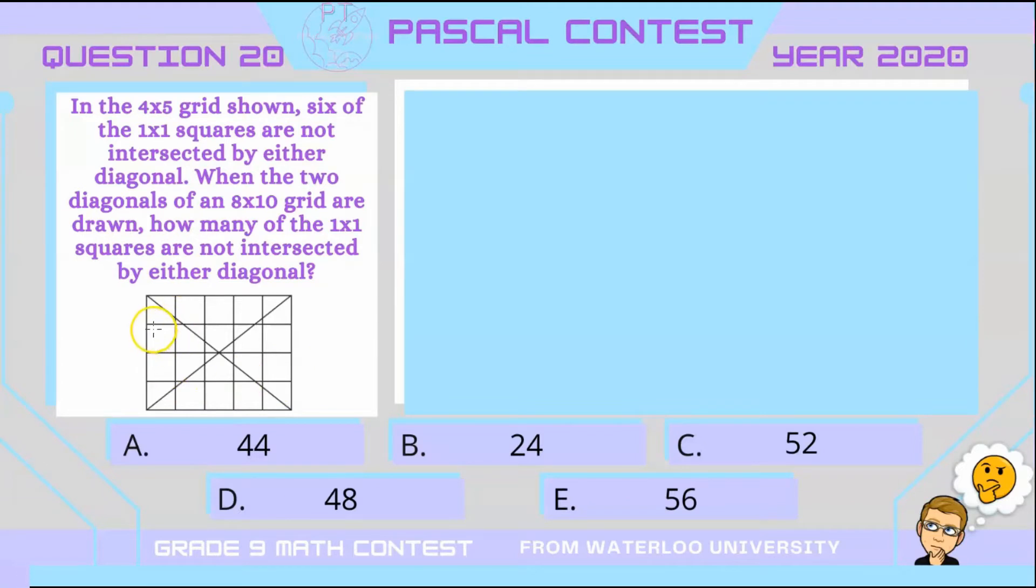All right, so in this case we can see that we have a total of 6 individual 1x1 squares which are not intersected by these diagonals. But what I want to do instead is ignore one of the diagonals.